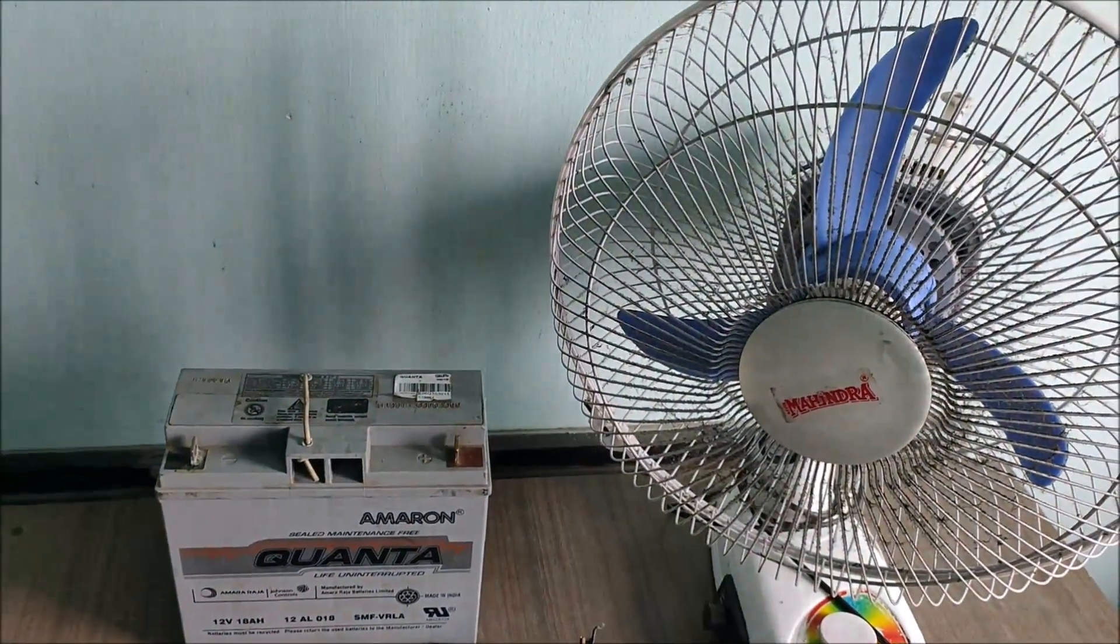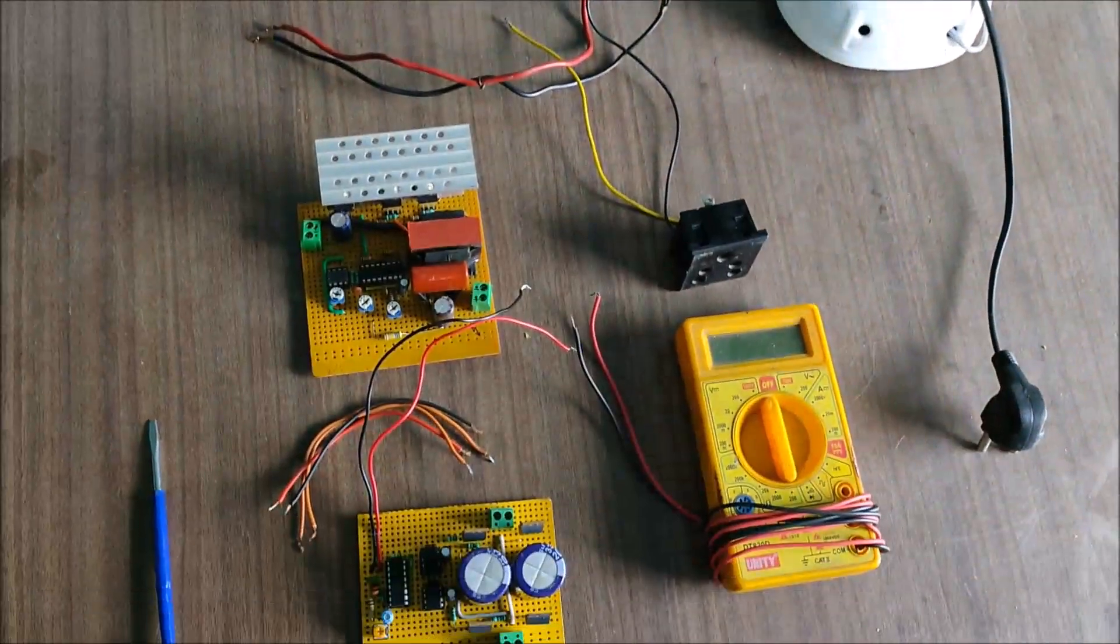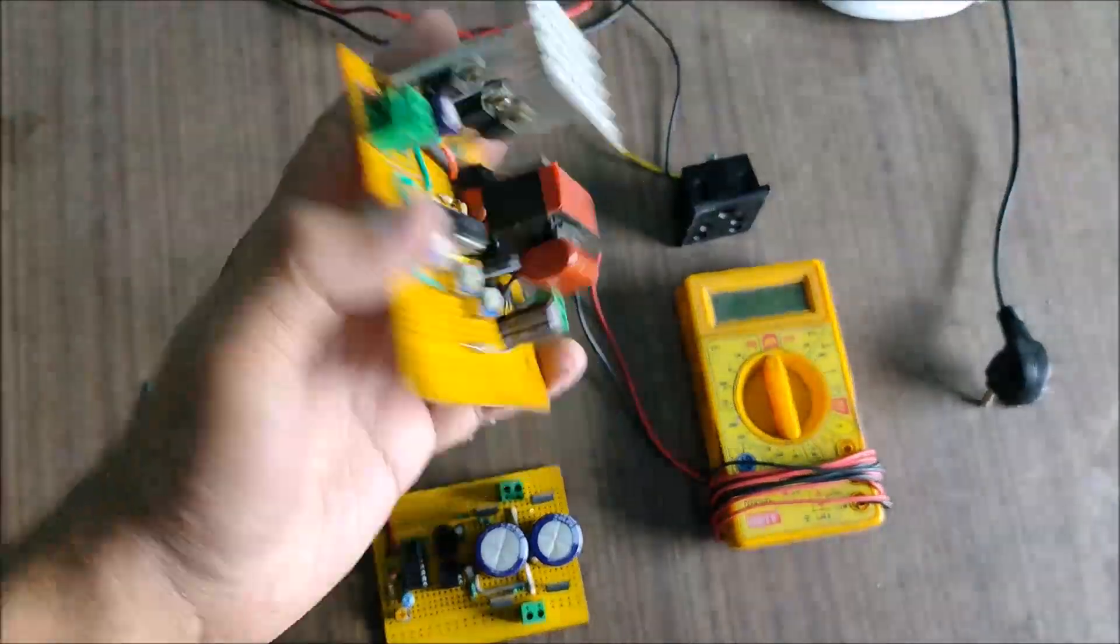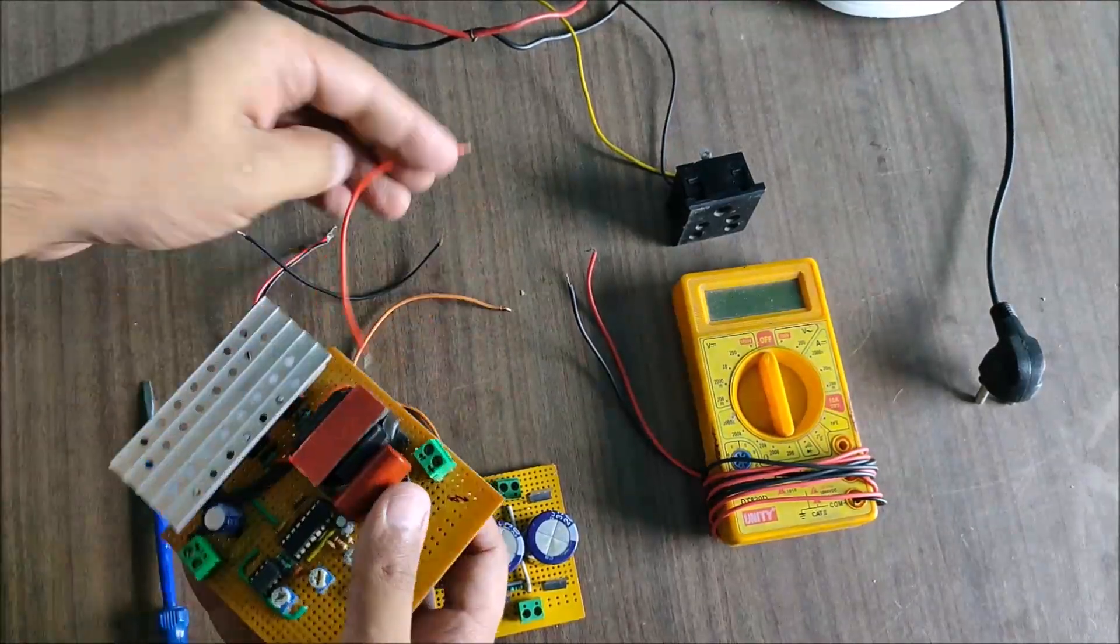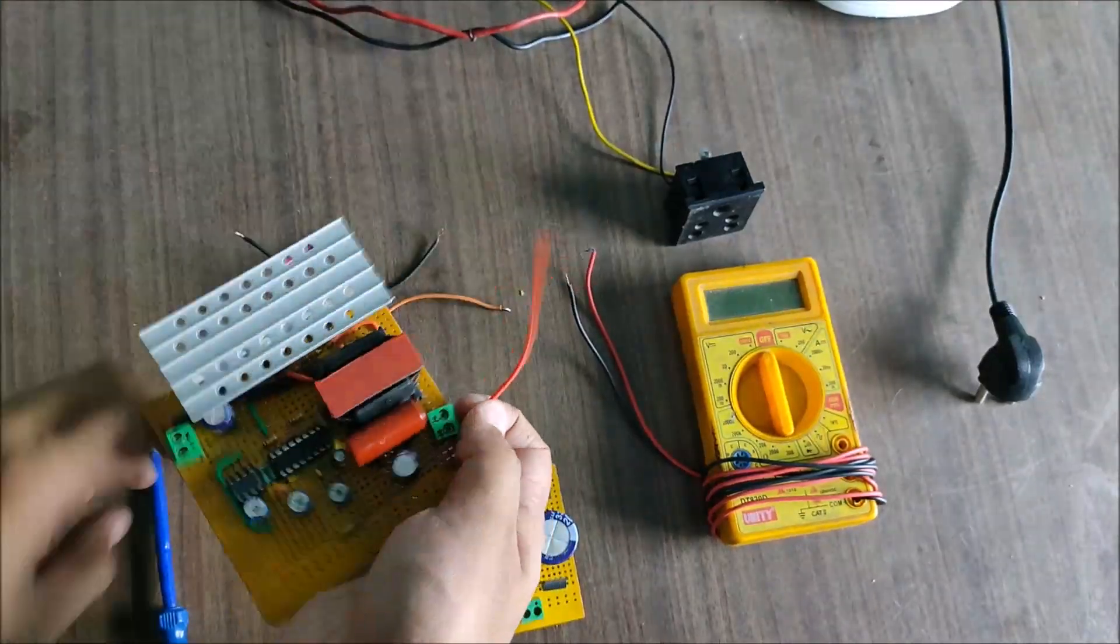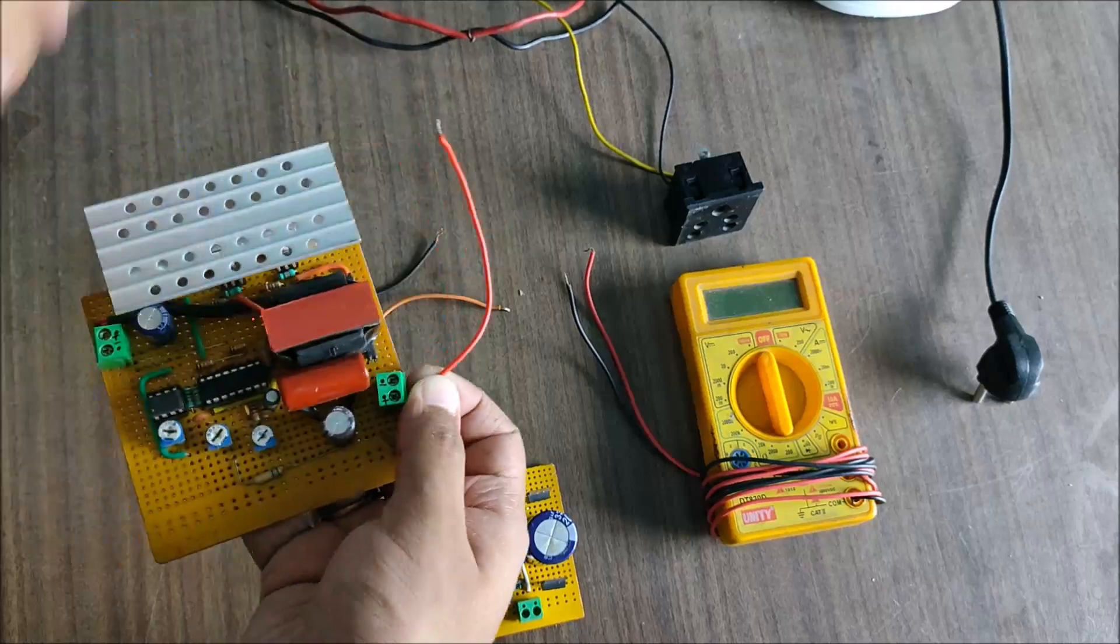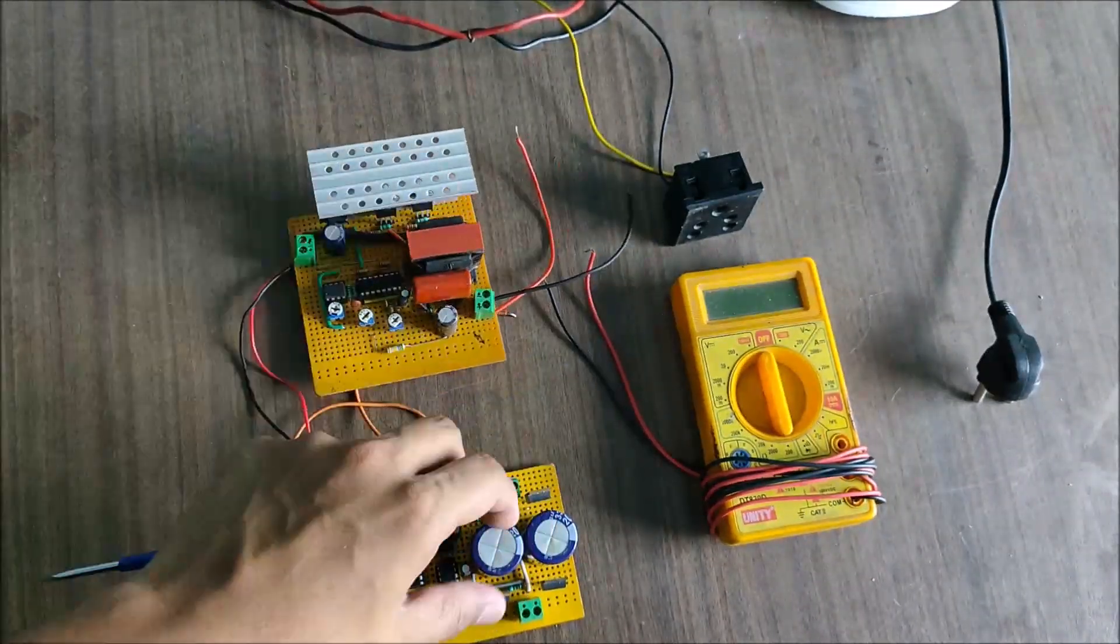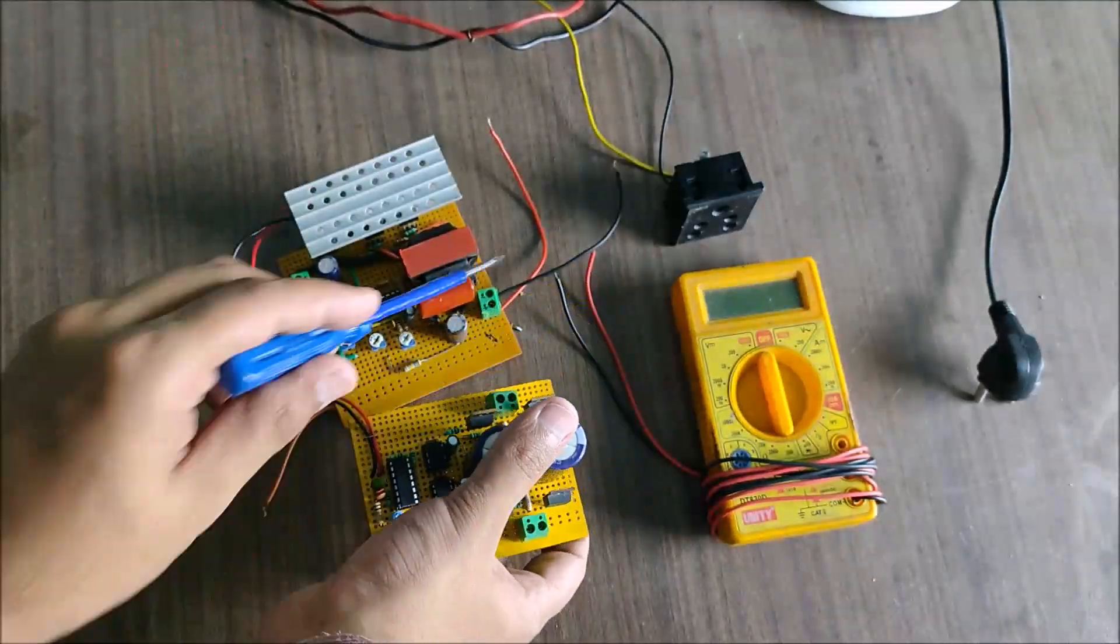With the module complete, it is now time for the final testing. Over here, I have the DC to DC converter along with the H-bridge oscillator along with a small 60 watt DC fan and a multimeter to measure the output voltage. Let us now connect the 240 volts DC output to the input of the H-bridge driver.